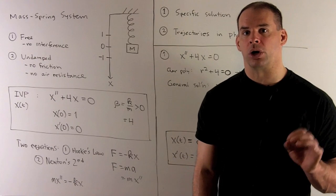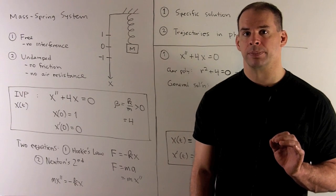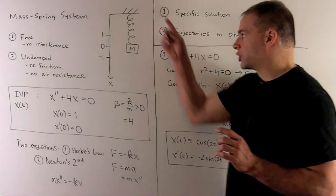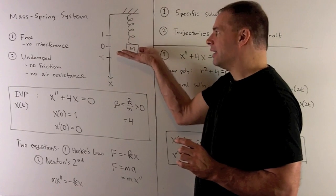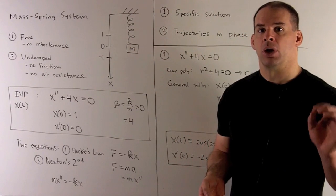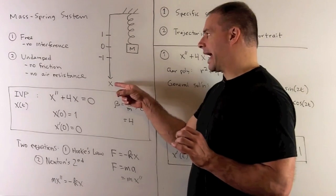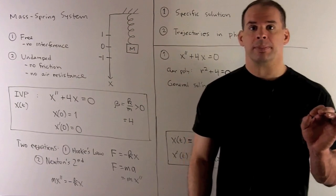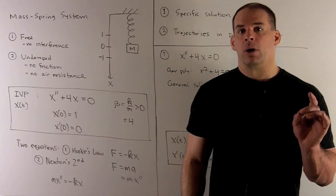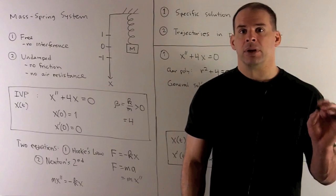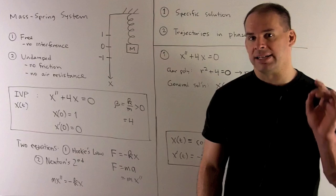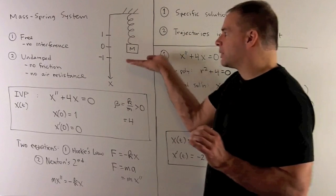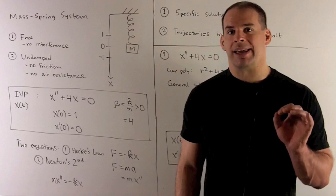As an application of linear second-order ODEs with constant coefficients, we want to study mass-spring systems. We have a spring with a mass attached to its end, and we let it hang until it reaches its equilibrium position, calling that height zero. We denote height by the variable X, raise the mass to position one, and release. We will study what happens after that, focusing on the case where motion is free and undamped — meaning no outside interference, so everything is determined by the spring and the mass.